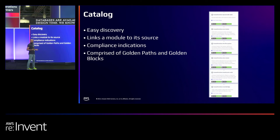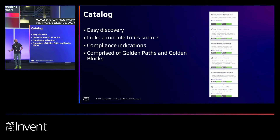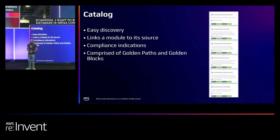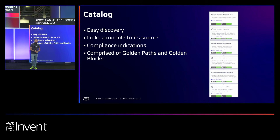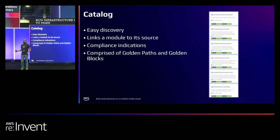And like any good catalog, we can start to enrich this with useful data. Compliance scanning — I want to know that my database is HIPAA compliant at design time. For configuring alarms ahead of time, can we put runbooks in so everybody knows when an alarm goes off what to do? We should. READMEs and learning materials so people know what to expect when they run infrastructure in the cloud and make sure they're making the right decision for their service. Our catalog can provide all of that. We should demand discoverability in all of our platforms.